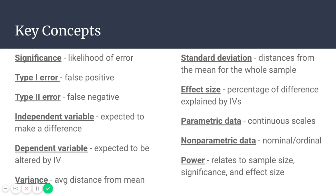Standard deviation is the distances from the mean for the whole sample — so what percentage of people were plus or minus a certain score away from the mean. The effect size is the percentage of difference explained by the independent variables, so how much of the difference found in the dependent variables can be explained by the specific intervention or independent variable.